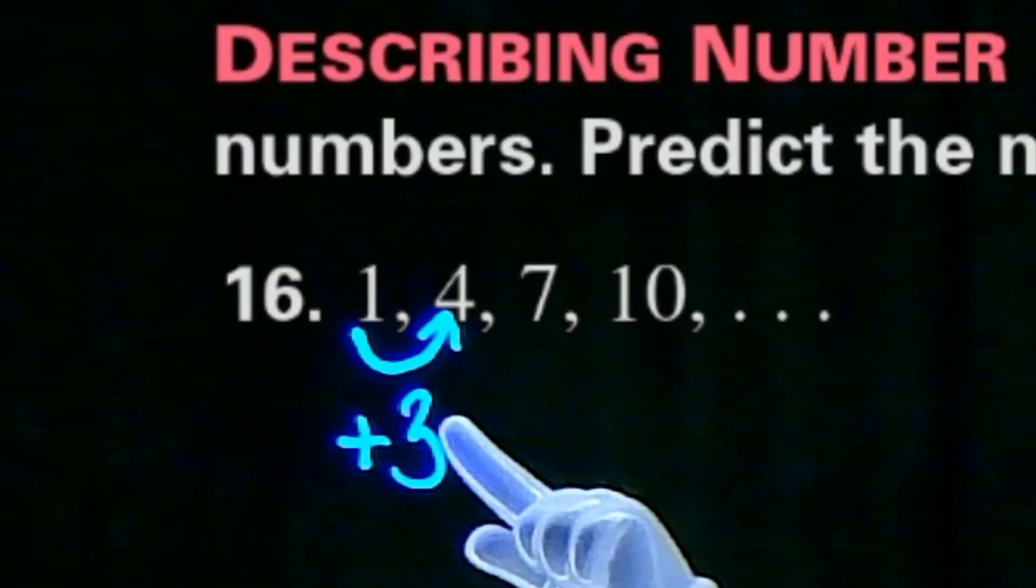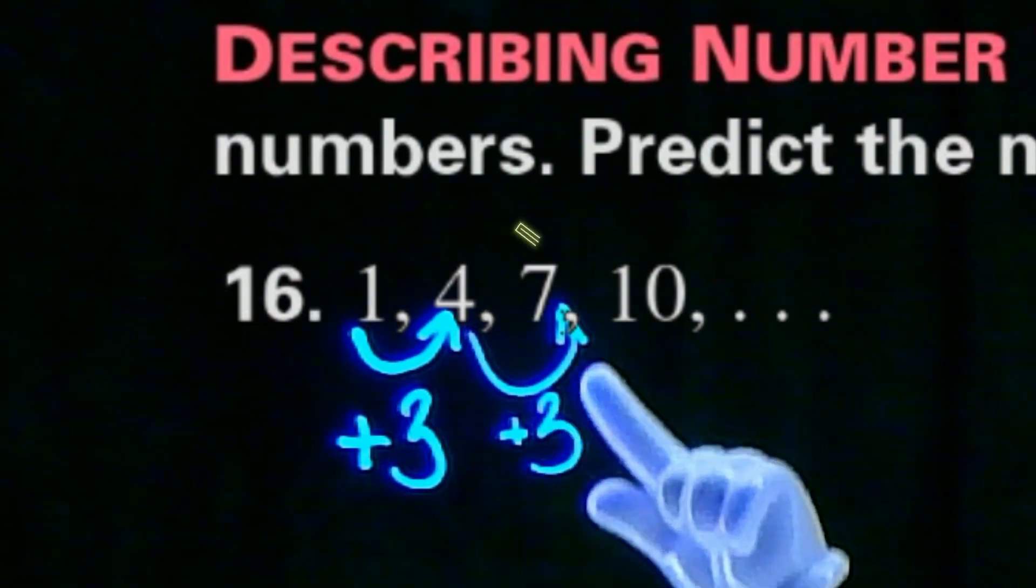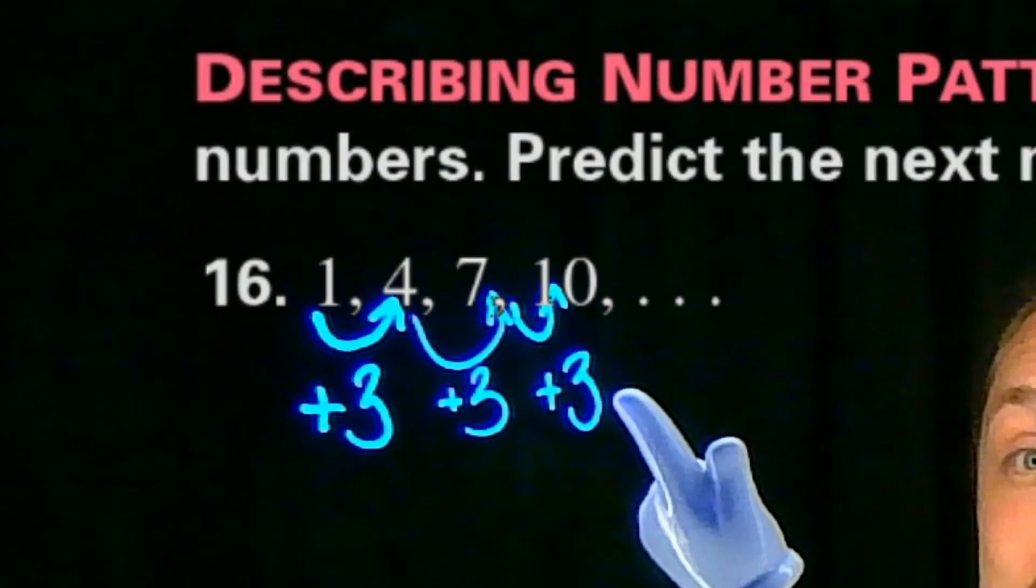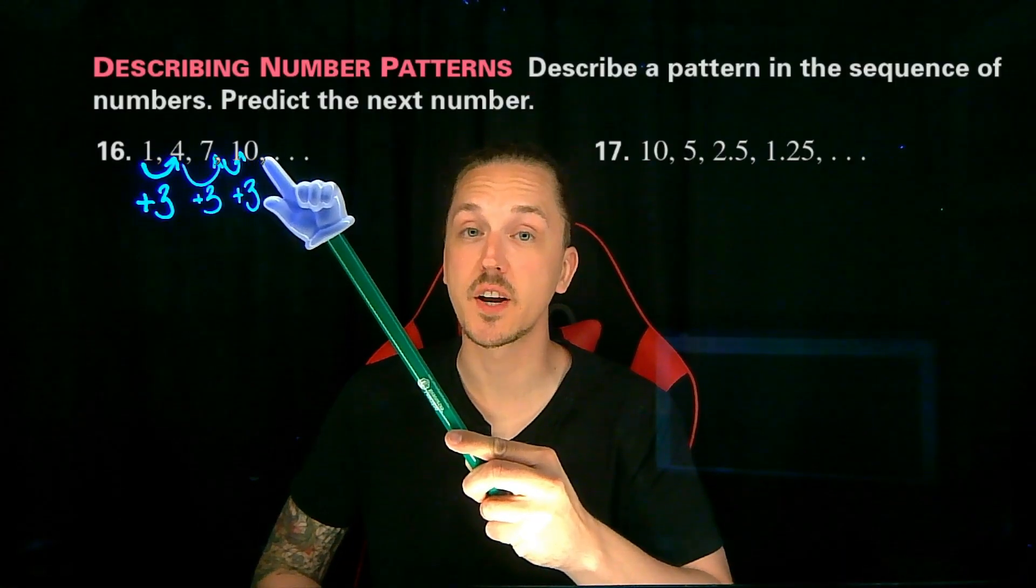1 plus 3 is 4, plus 3 is 7, plus 3 is 10. So, from 10 we would add 3...